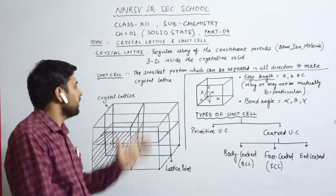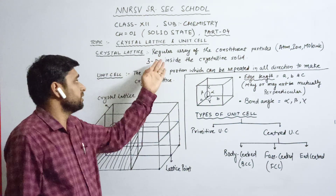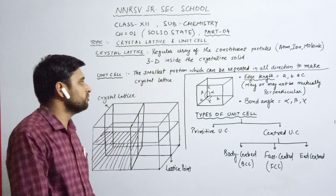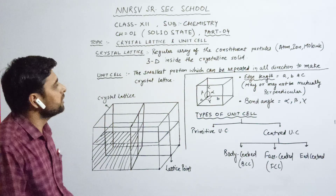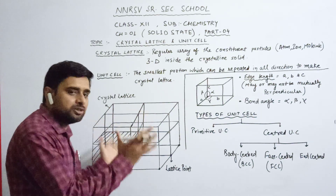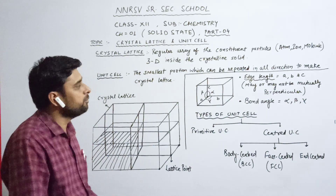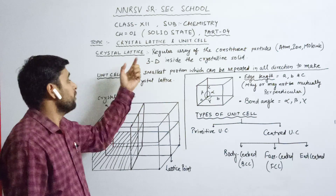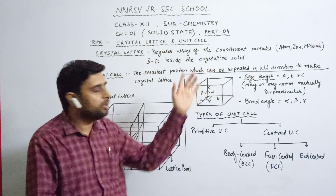In this video we explain what is crystal lattice and unit cell. Crystal lattice is the regular array of constituent particles three-dimensionally inside a crystalline solid. Constituent particles include atoms, ions, and molecules arranged in a regular three-dimensional pattern. The smallest portion which can be repeated in all directions to make a crystal lattice is known as a unit cell.